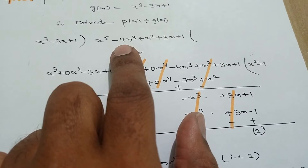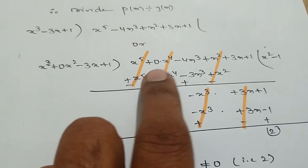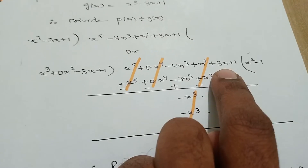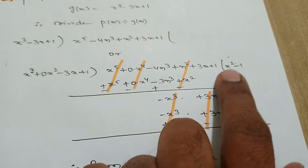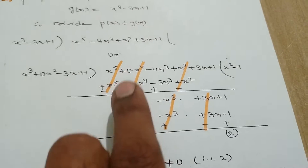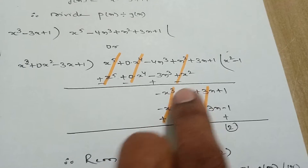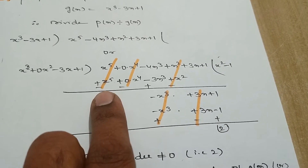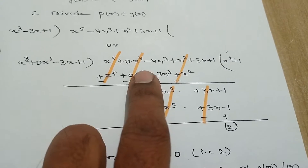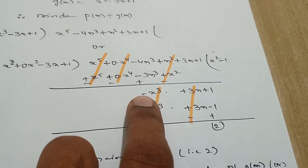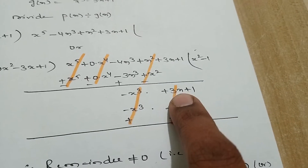Similarly, the x⁴ term is missing in p(x), so we keep it with zero coefficient: p(x) = x⁵ + 0x⁴ - 4x³ + x² + 3x + 1. For x³, what we should multiply to become x⁵? We multiply by x². 0x² into x² = 0, -3x into x² = -3x³, and 1 into x² = x². By doing subtraction the signs change. x⁵ gets cancelled, x⁴ terms cancel, -4x³ + 3x³ = -x³, and x² terms also cancel. 3x is left.